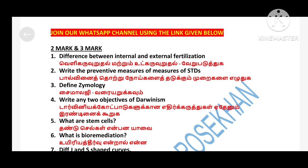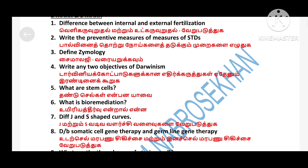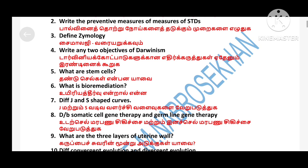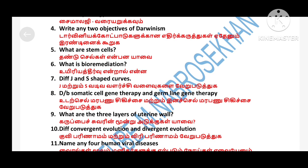First, for 2-mark and 3-mark questions: Difference between internal and external fertilization. Write the preventive measures of STDs. Define Zymology. Write any two objectives of Darwinism. What is bioremediation? Difference between J and S growth curves.